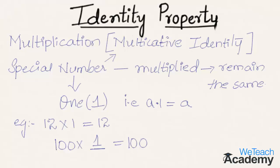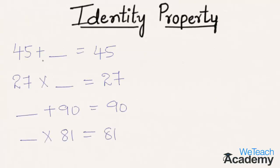Now let us go through a few more examples. In the first example, 45 should be added to some number so that we get the sum as 45. Seeing the addition sign, we add the additive identity, that is 0: 45 + 0 = 45. In the next example, seeing the multiplication sign, the multiplicative identity 1 is multiplied with 27, giving the product as 27. In the next example, we have an addition sign, so we add the additive identity: 0 + 90 = 90.